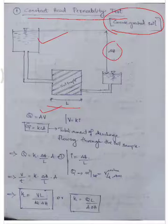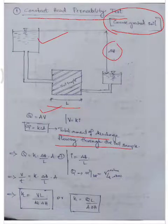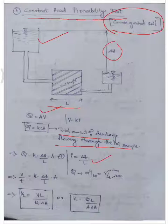The hydraulic gradient i is the head difference delta H divided by the length of the soil sample L. We substitute i into the equation. So Q is equal to k times delta H divided by L, times A. That gives us our working equation.